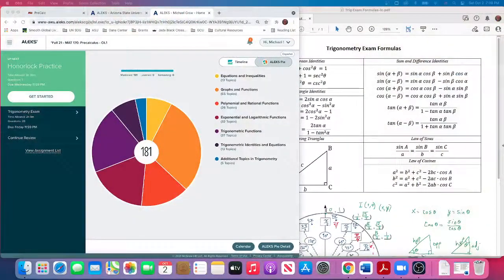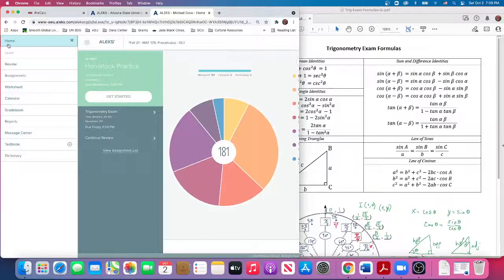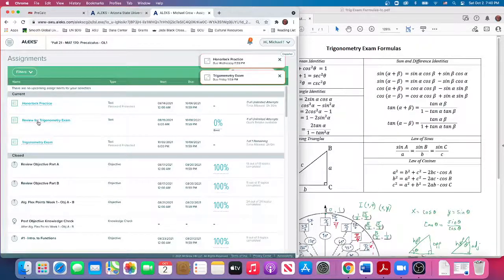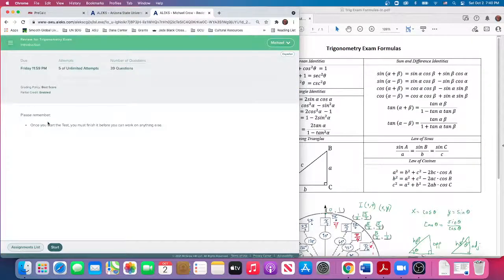So we're going to switch over to this screen. To do the trig exam review, you come to Alex through Canvas. Once we're here, you may see a tab that says 'do the review.' Obviously trigonometry exam, we don't want to do that yet. So you can click on these three horizontal lines that gives you the dropdown menu. We can go to assignments and there's the review for trigonometry exam.